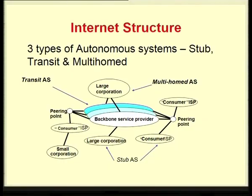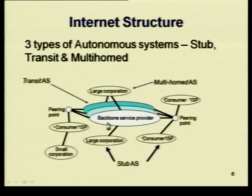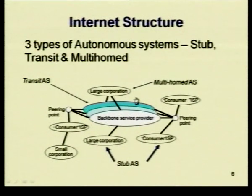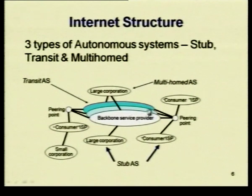For instance, a large corporation could be a stub autonomous system — it takes services from a backbone service provider but will not carry traffic meant for some other backbone service provider. A large corporation connected to two different service providers is a multi-homed AS. The service providers themselves act as transit autonomous systems because they carry traffic through their AS and deliver it to other autonomous systems.